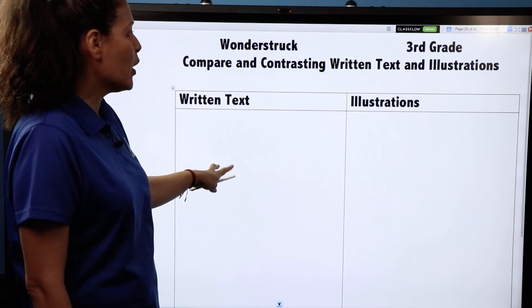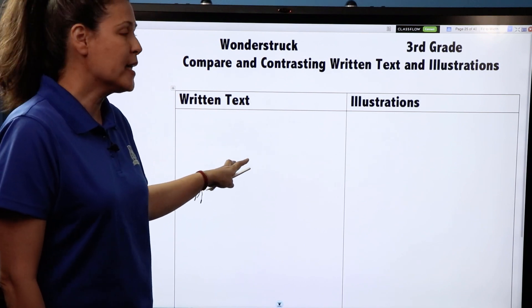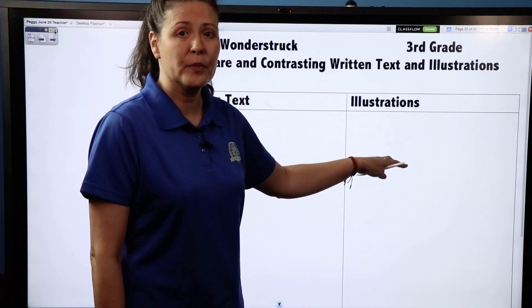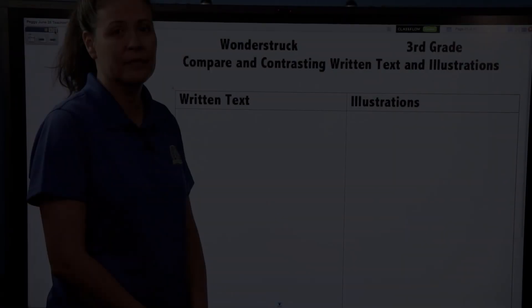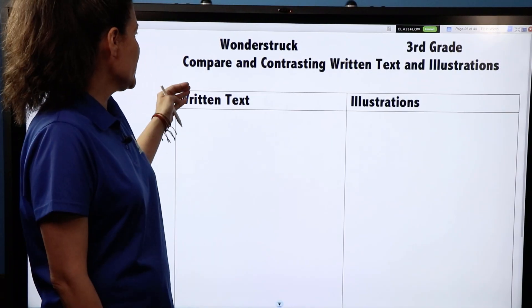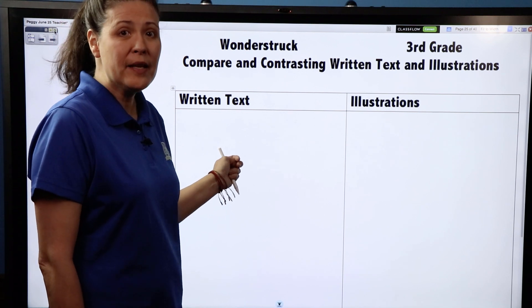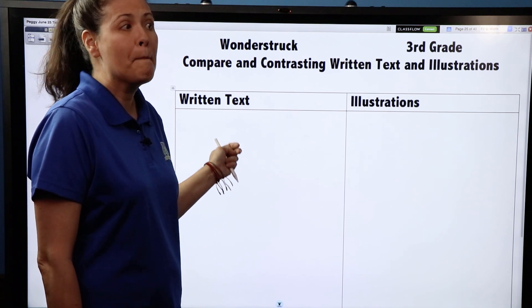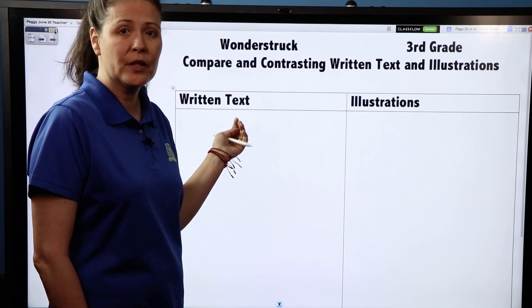So when we start, it's going to be very basic information about what we have found out from the written text and what we have found out from the illustrations. For the written text, the main thing that we learn is that Ben is the main character. So let's write that down together right now.